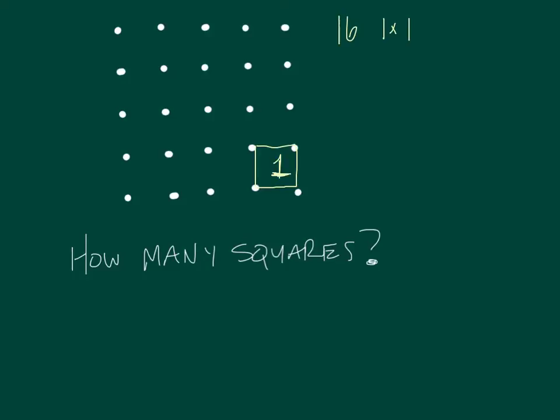What's next? Then you have 2 by 2s. How many of those? This is 2 by 2 — it's huge. So, 2 by 2, and there's 1, 2, 3, 4, 5, 6, 7, 8, 9.